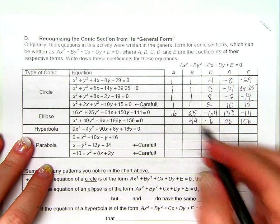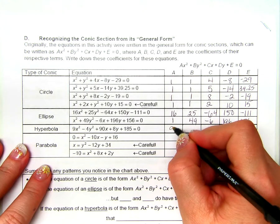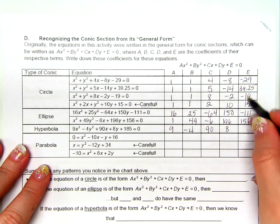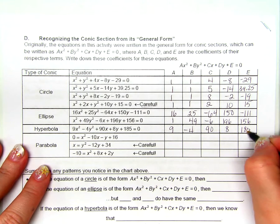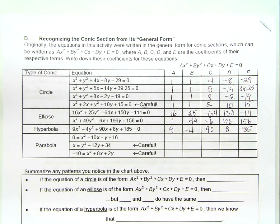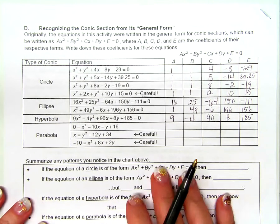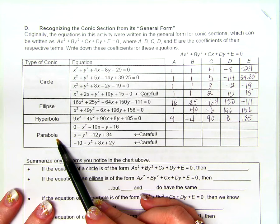16. What's b? 25. What's c? Negative 64. D? 150. And e? Negative 111. What about this next one? A? 1. B? 49. C? Negative 6. D? 196. And e? 156. So, just compare the two with this. Take those and see if you can figure out why it's an ellipse. While it is a good observation that both of the c's are negative, are both of the c's always going to be negative? No. We really need to focus on a and b.